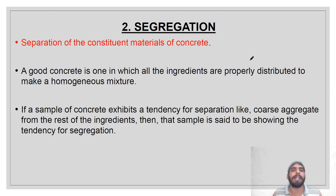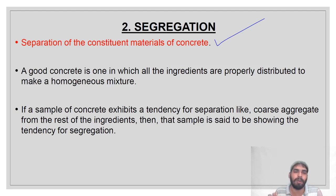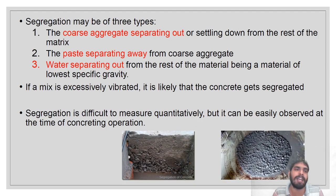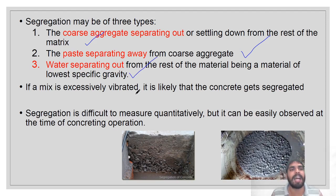The second property is segregation — the separation of constituent particles of concrete. A good concrete has all ingredients properly distributed to make a homogeneous mixture. If a sample exhibits a tendency for separation — such as coarse aggregate separating from the rest — it is said to show a tendency for segregation. Types include: coarse aggregate settling out, paste separating from aggregate, and water separating out. Excess vibration can also cause segregation.